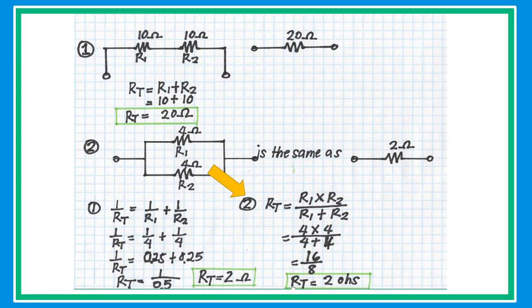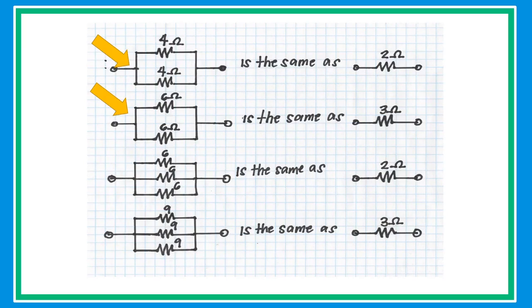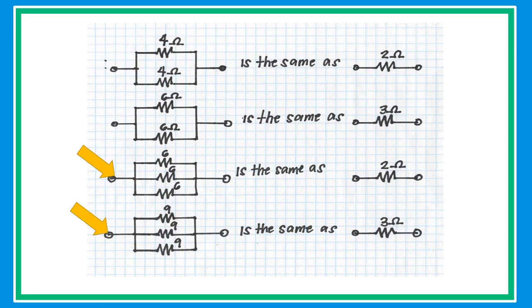Substitute the resistor values to get the equivalent resistance. If two resistors in parallel have the same value, the equivalent resistance is simply half of that value — for example, two 4 ohm resistors give 2 ohms, and two 6 ohm resistors give 3 ohms. If three or more resistors of equal value are connected in parallel, just divide the resistor value by the total number of resistors.